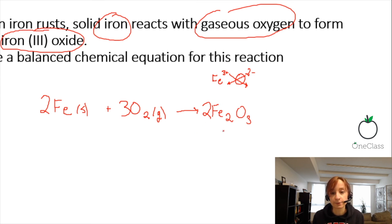But now we gave ourselves 4 iron atoms on the product side, so we just need to change this 2 to a 4.